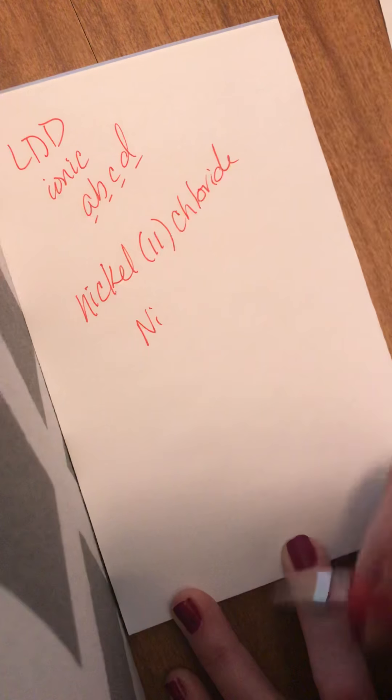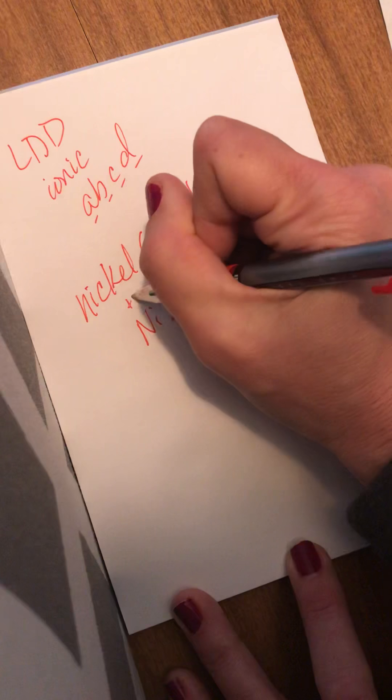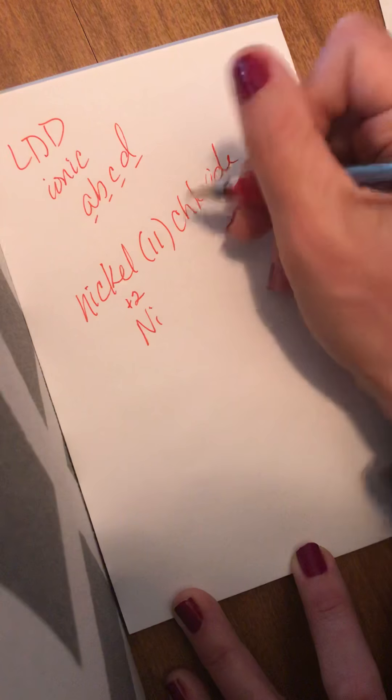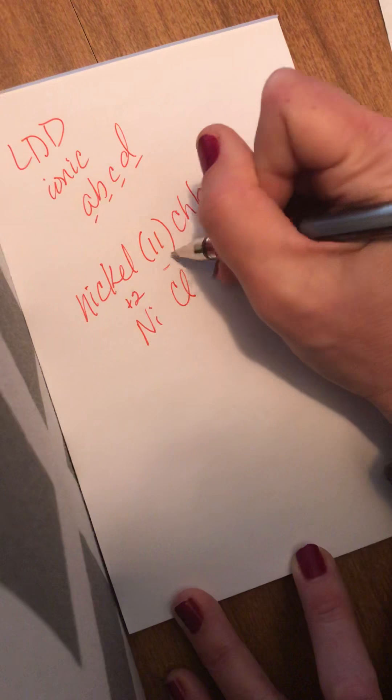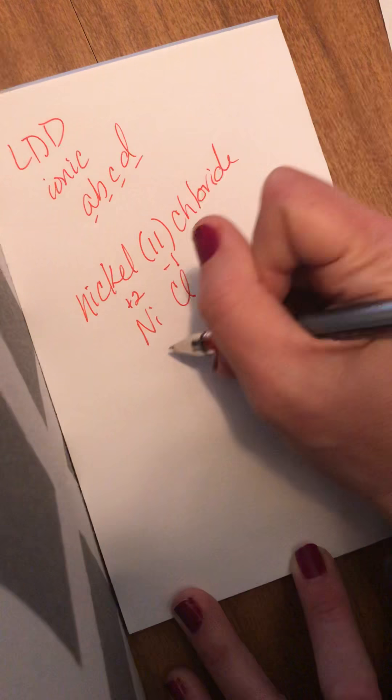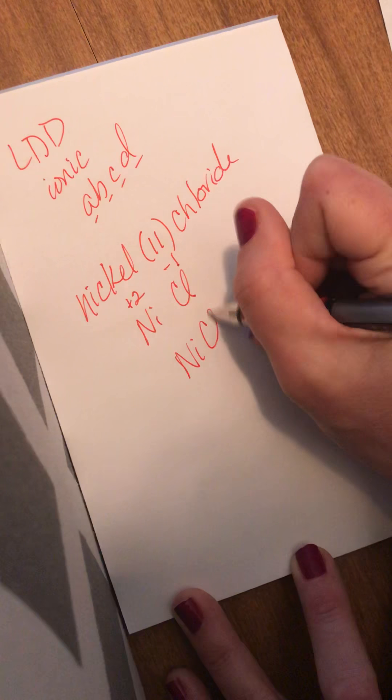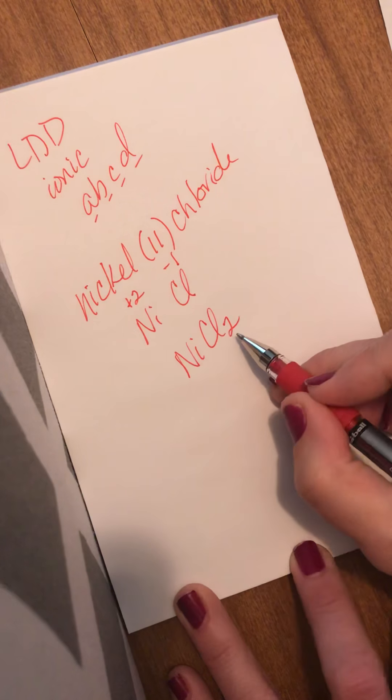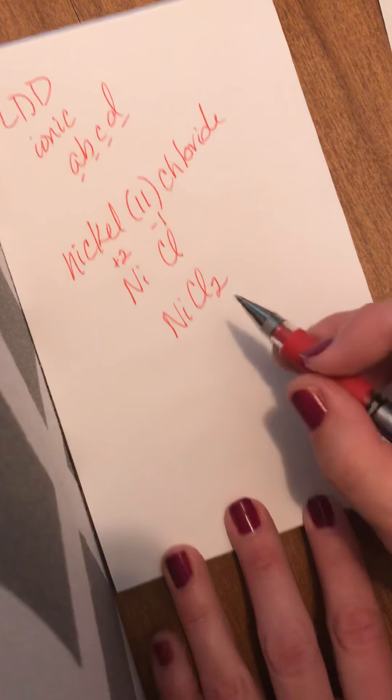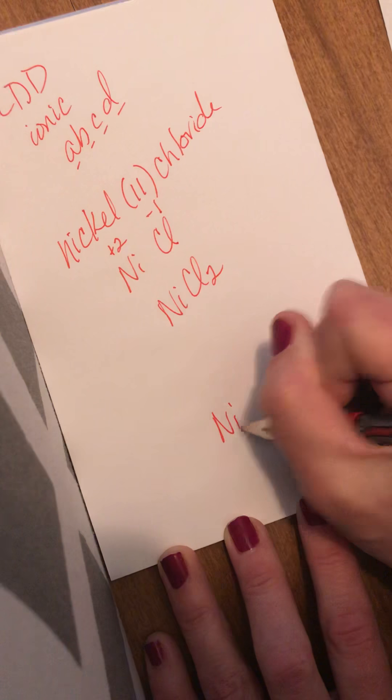Nickel two tells me that I write Ni, two tells me the charge on nickel, so I put a +2. Chloride is chlorine. Chlorine is a -1. I crisscross, I get NiCl2. That is the formula. Now to do the Lewis dot diagrams, I need the atoms, so I need one Ni, I put it right in the middle. I need two Cl's, I put one here, I put one here.